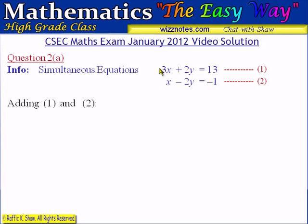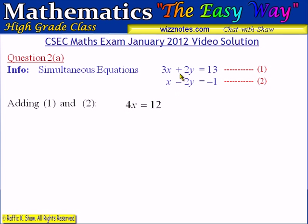When we add the two equations, we are adding the left-hand sides and the right-hand sides. We end up with 3x plus x, which is 4x. The y terms eliminate each other, and then 13 minus 1 is 12. So the result of adding those two equations is 4x on one side and 12 on the other.